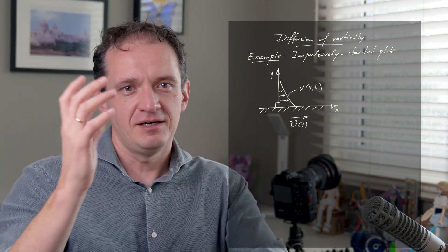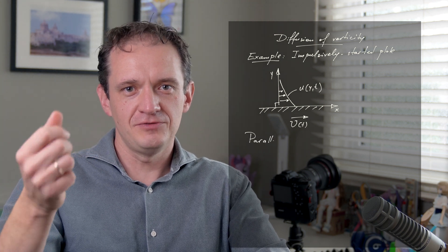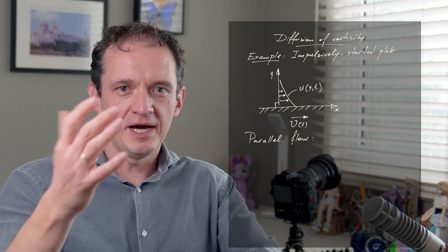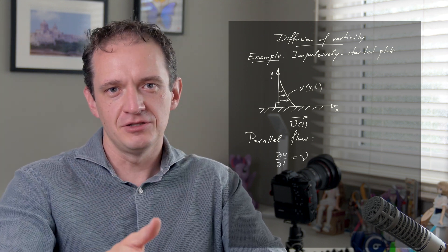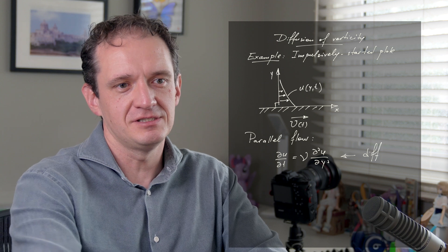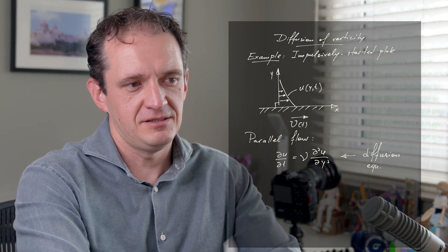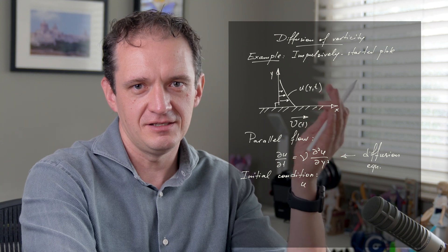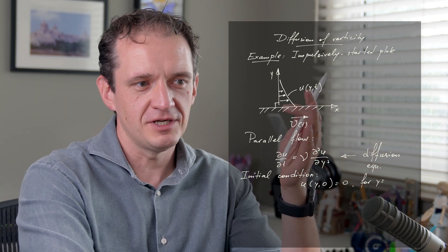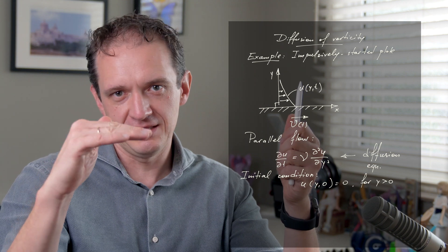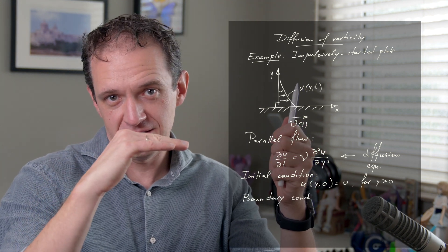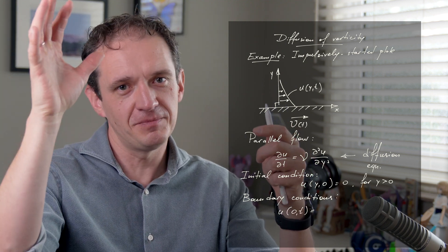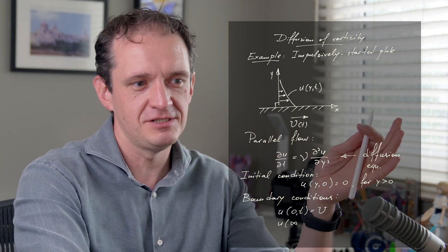We were looking for a solution of a diffusion equation: u as a function of y, which is the direction normal to the plate, and t, which is time. It's subject to an initial condition — there is no velocity at t equals zero — and two boundary conditions: velocity at the plate equals the velocity of the plate, capital U, and far away from the plate at y equals infinity the velocity is zero.